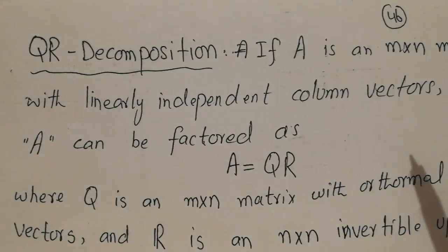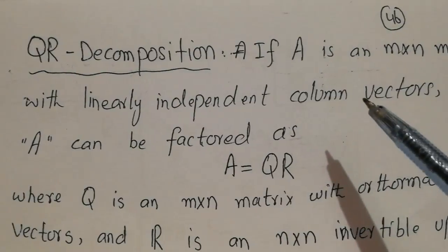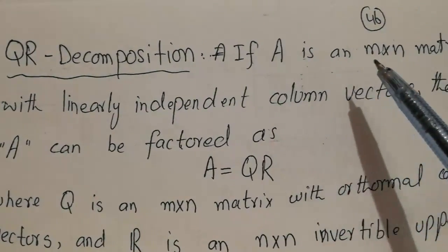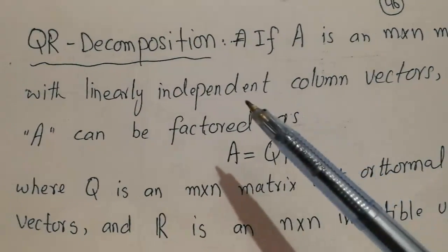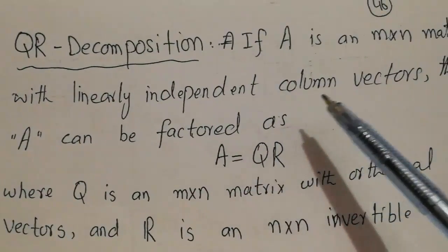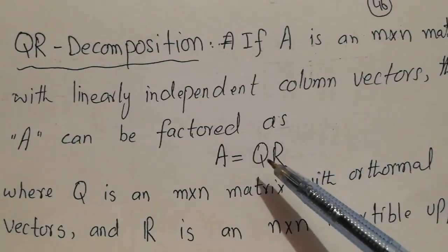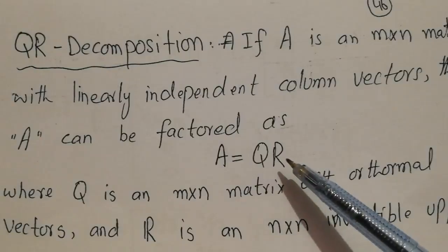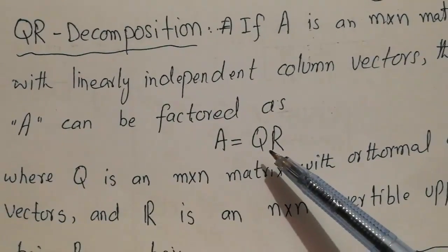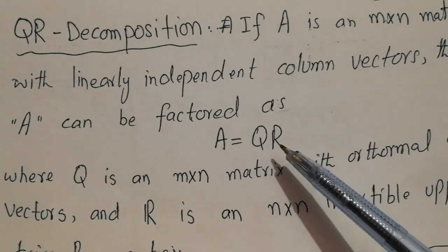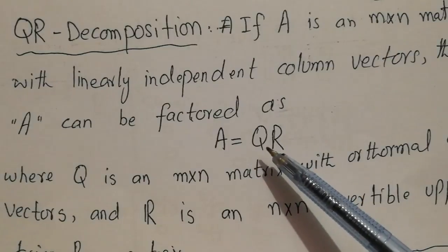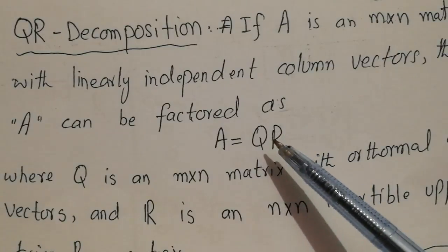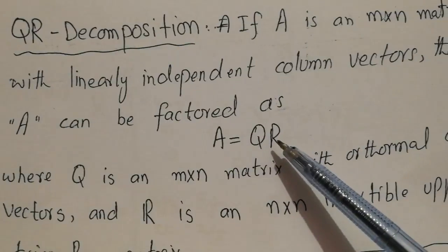In this process, we break down a matrix A, which is an m×n matrix with linearly independent column vectors, into a product of two matrices: Q and R. That is why this process is called QR decomposition or QR factorization.